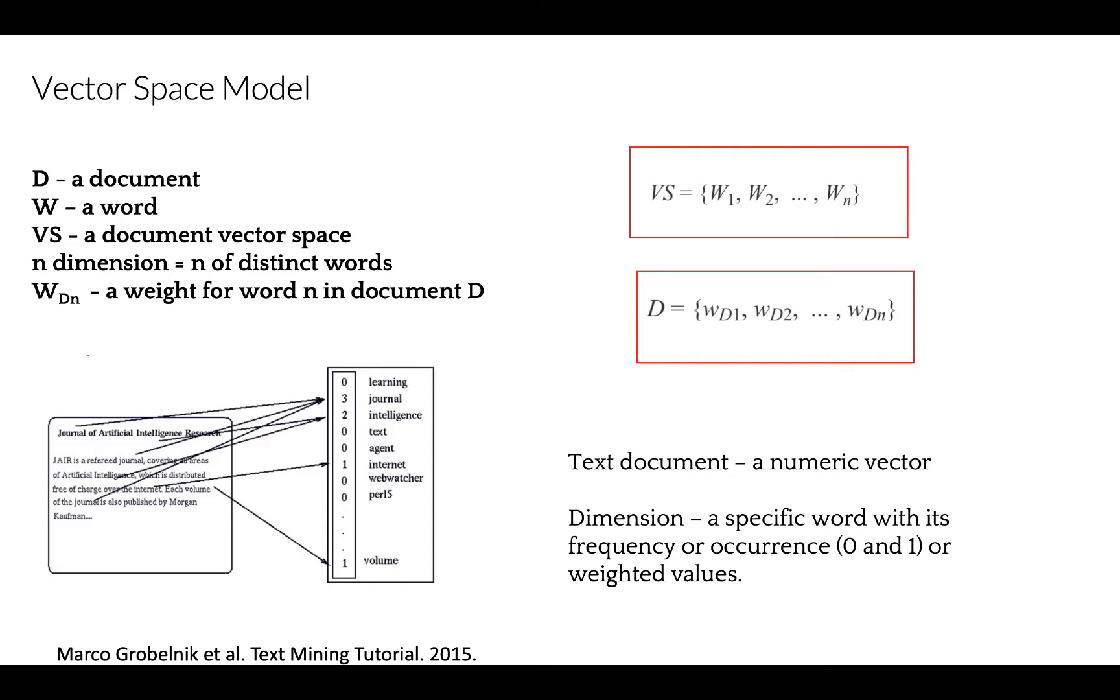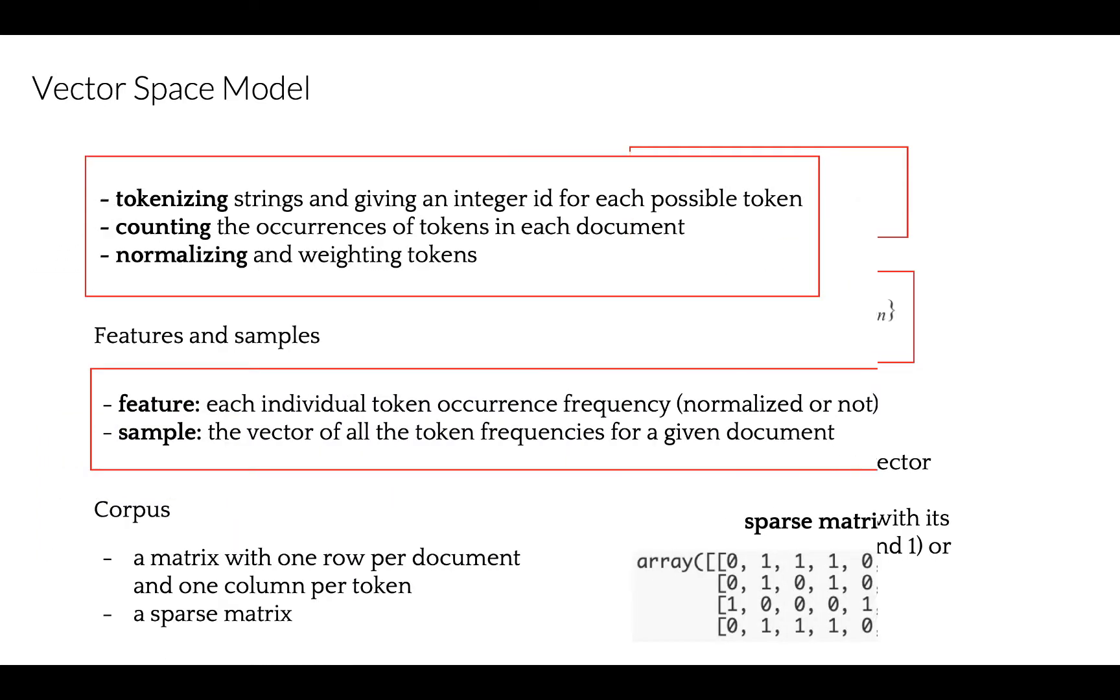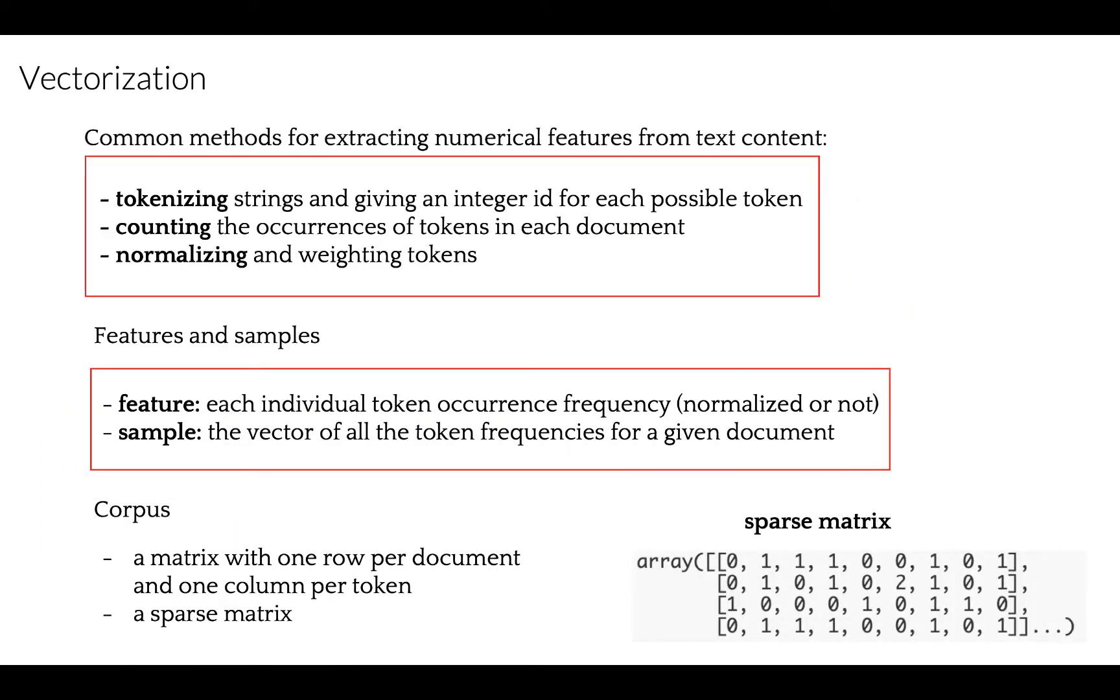Each text document is a numeric vector, where each dimension is a specific word from the corpus, and a value could be its frequency, occurrence, denoted as 1 or 0, or even weighted values. There are several common methods for extracting numerical features from text content.